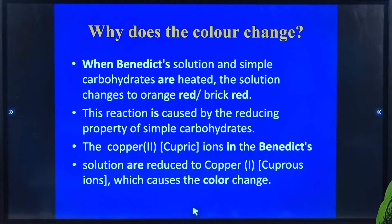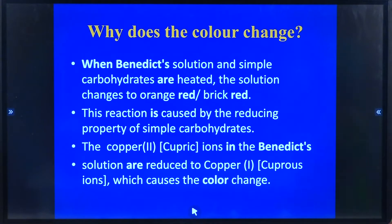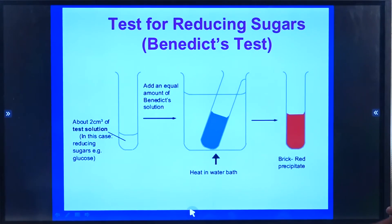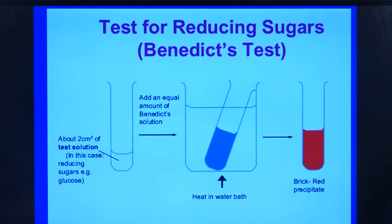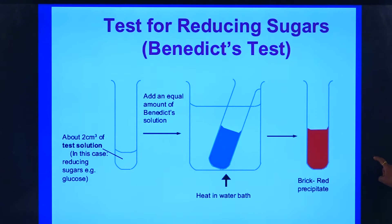Why did the colour change? When Benedict's solution and simple carbohydrates are heated, the solution changes to orange red or brick red. The reaction is caused by the reducing property of the simple carbohydrates. The cupric ions present in Benedict's solution are reduced to cuprous ions, and that is why there is a change in the colour. Earlier the colour was blue, and after heating for 2 to 3 minutes we obtained brick red.